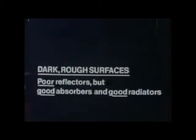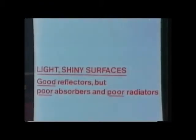So we can summarise: dark, rough surfaces are poor reflectors but good absorbers and good radiators, whereas light and shiny surfaces are good reflectors but poor absorbers and poor radiators. This fact is used in the design of the vacuum flask, which has silvered surfaces to reduce the amount of heat lost by radiation.